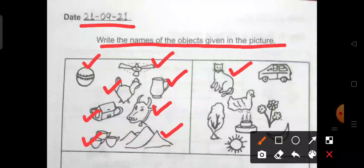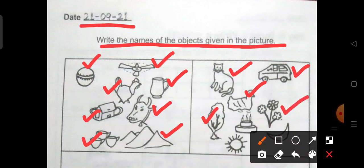We see a cat, a car, a duck, tree, flowers, a cake, sun and moon.